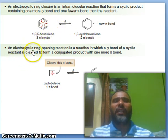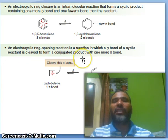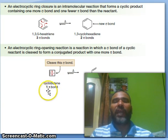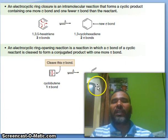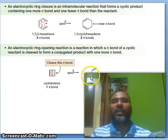An electrocyclic ring opening reaction is a reaction in which a sigma bond of a cyclic reactant is cleaved to form a conjugated product with one more pi bond. For example, cyclobutene has one pi bond, but on heating it converts into 1,3-butadiene with two pi bonds. So this is an example of ring closing and this is an example of ring opening — both are electrocyclic reactions.